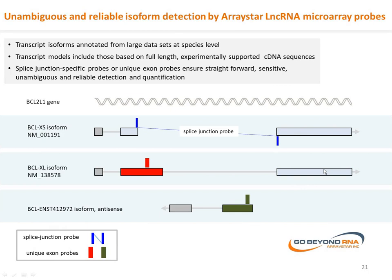For microarrays, the detection of lncRNA isoforms is easy, unambiguous, precise, and reliable. Isoform-specific probes can be designed for all cataloged transcript isoforms using unique spliced junction sites or unique exon sequences.